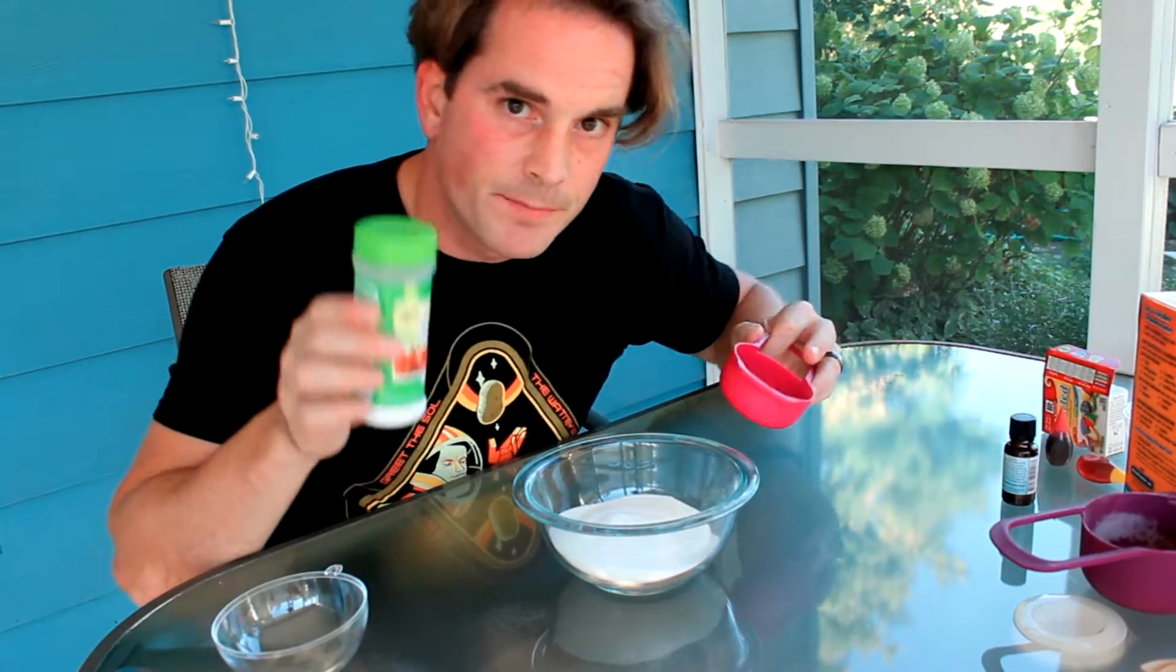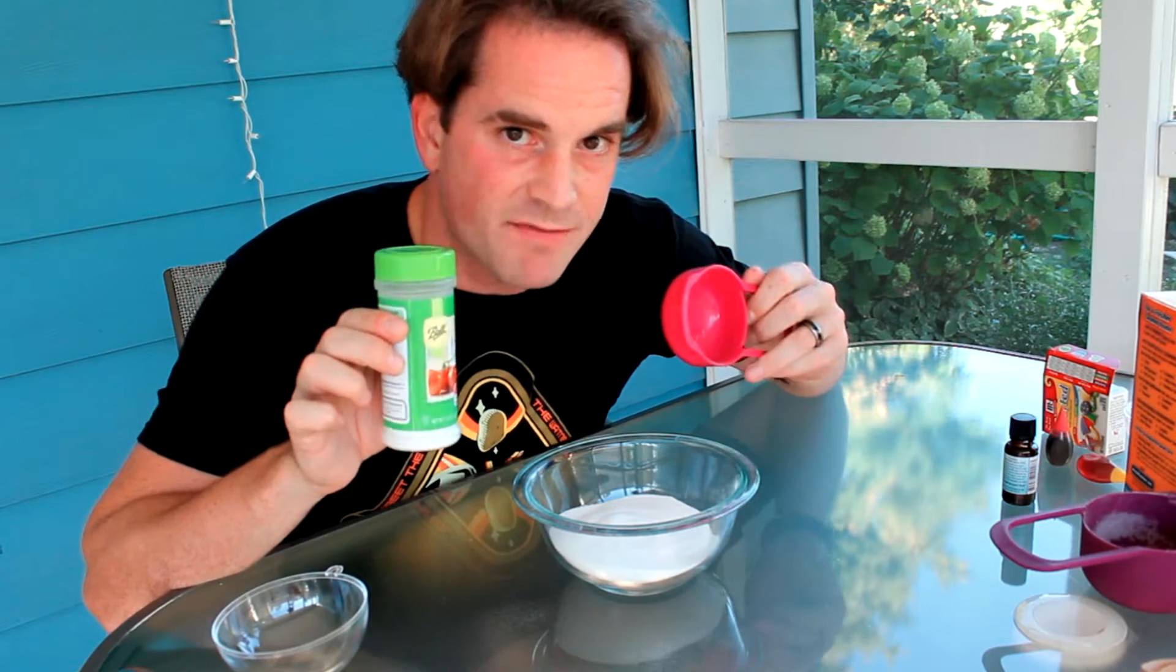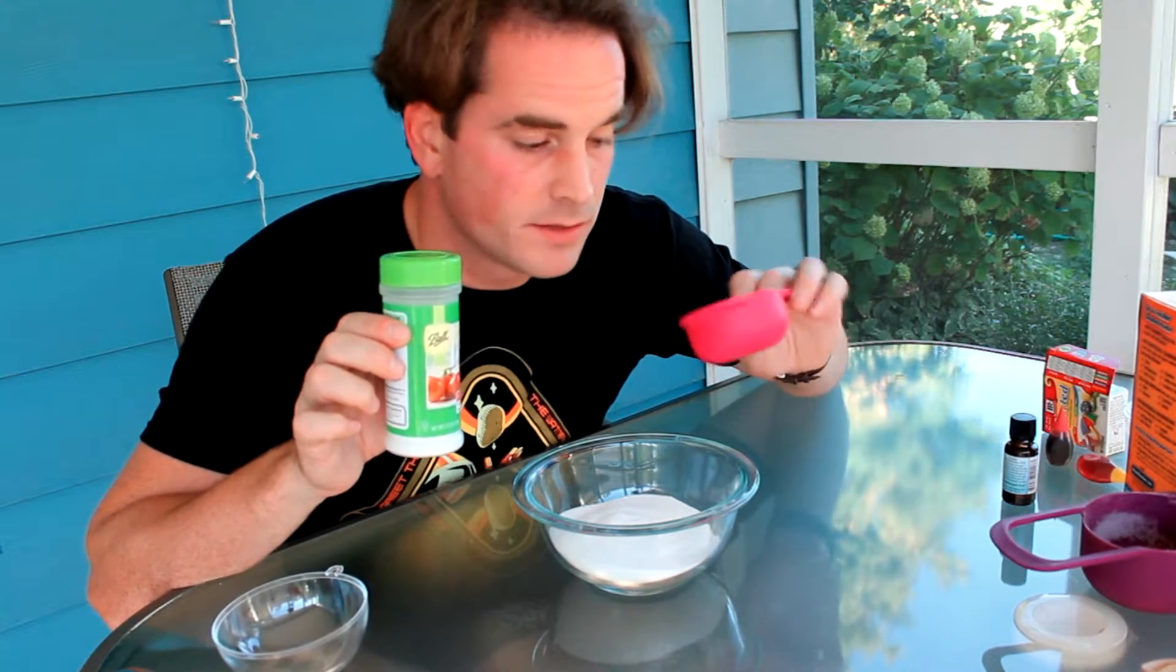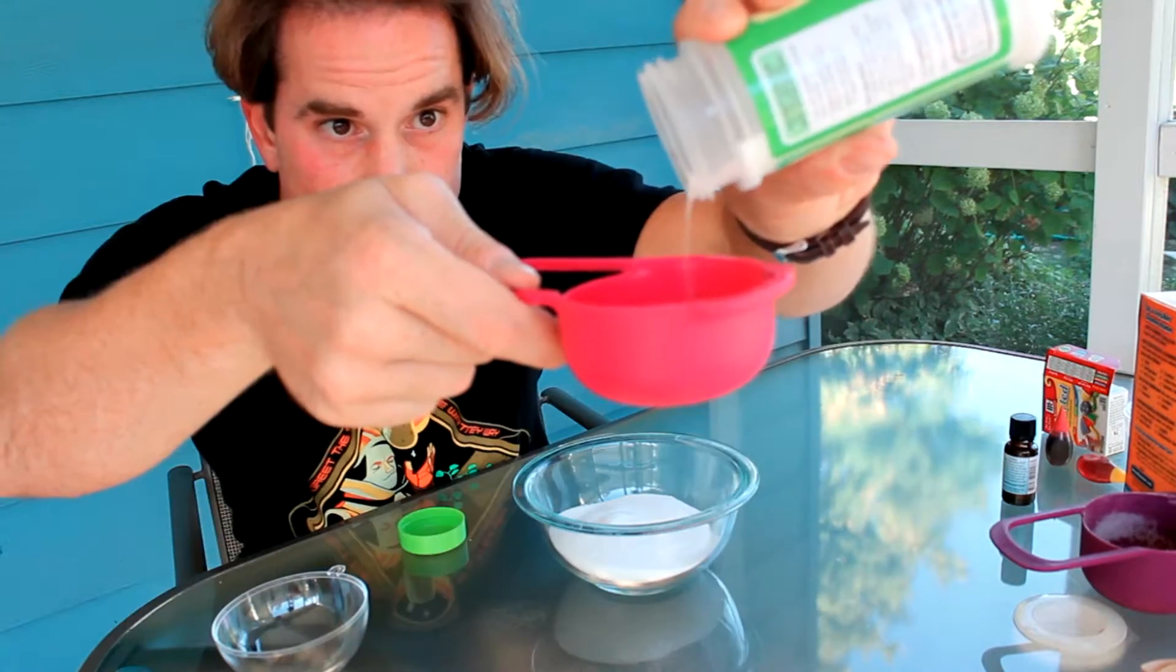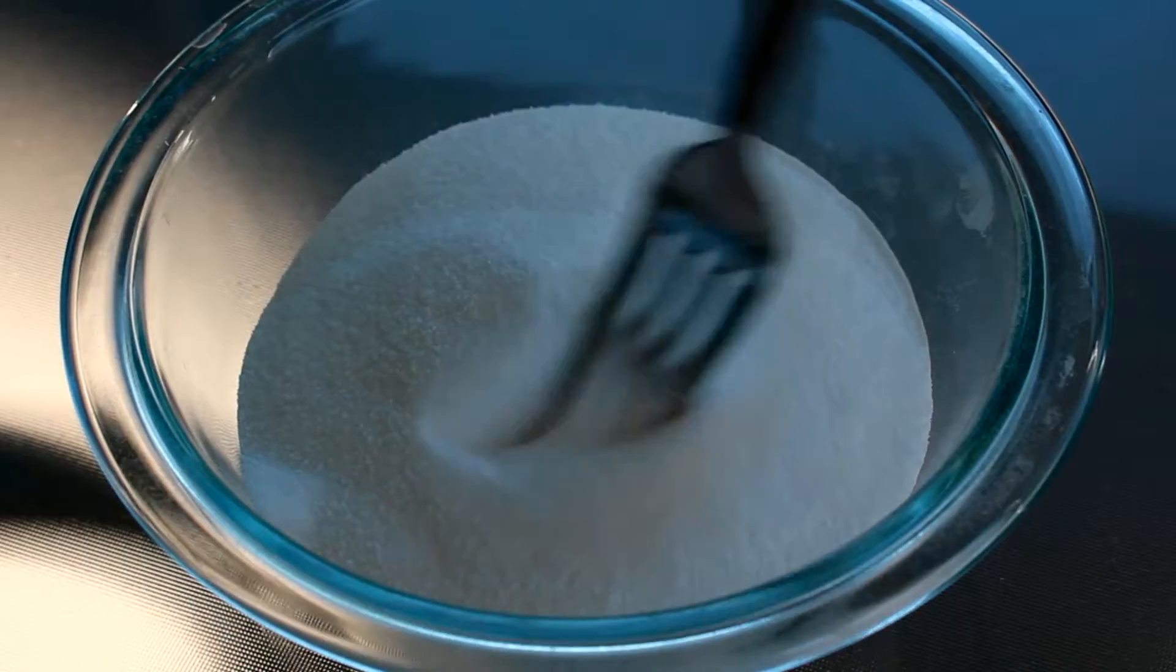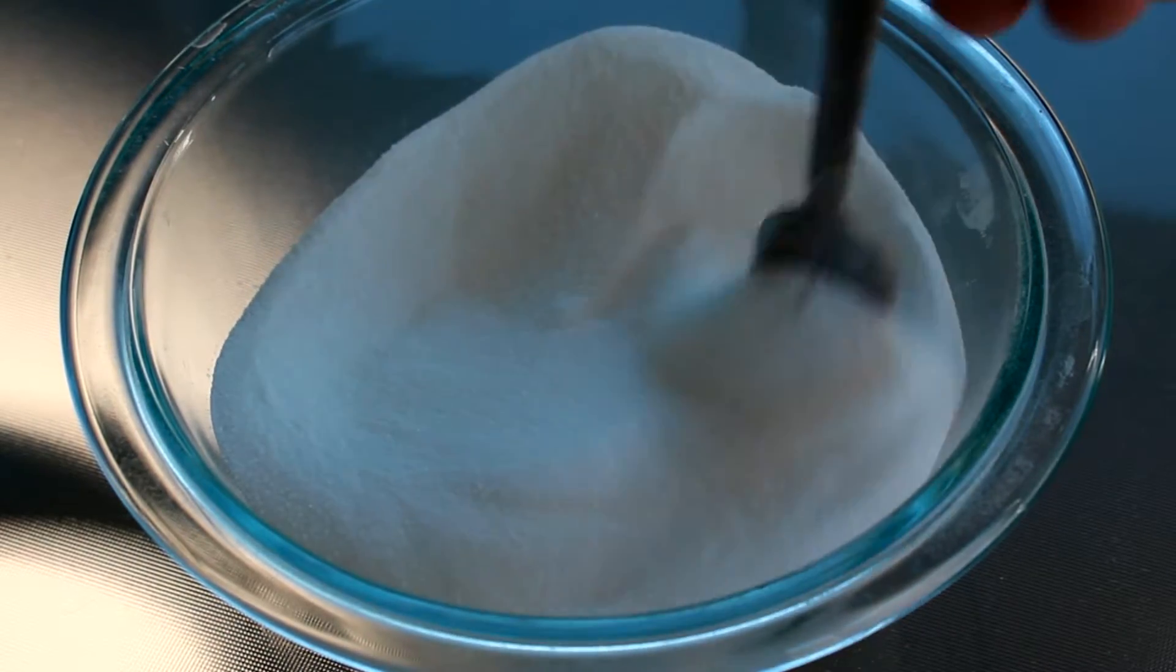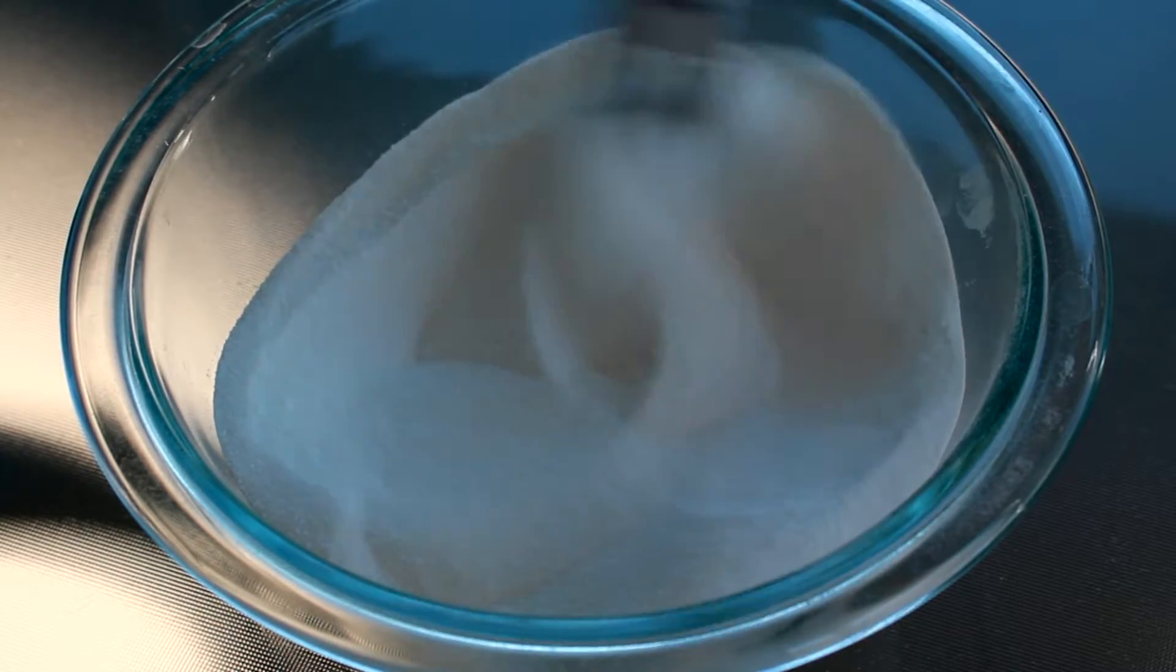Next, for my citric acid, whatever volume of dry baking soda you've used, you want half that volume of dry citric acid. So for me, that's a half cup. Half cup of citric acid. Now, since these are the two main ingredients for the chemical reaction, we're going to go ahead and stir these up so that way they're nice and close together.